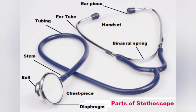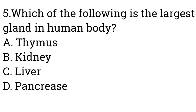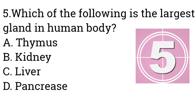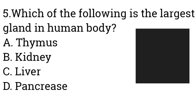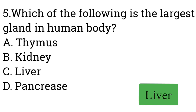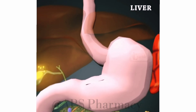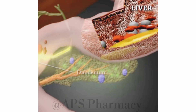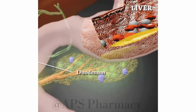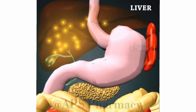Question number five: Which of the following is the largest gland in the human body? A: Thymus, B: Kidney, C: Liver, D: Pancreas. Answer is Liver. The liver is the largest gland of the human body and performs several vital functions like metabolism of food and medicines, detoxification, storage of vitamins and minerals, and production of bile for lipid digestion.